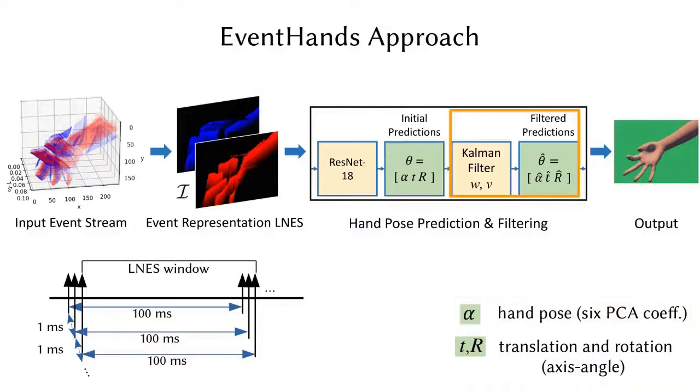To stabilize per-frame estimates temporally and to make the method robust to noise, we apply a Kalman filter on the network predictions.